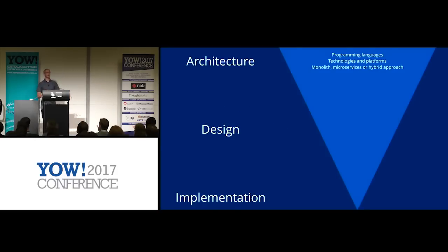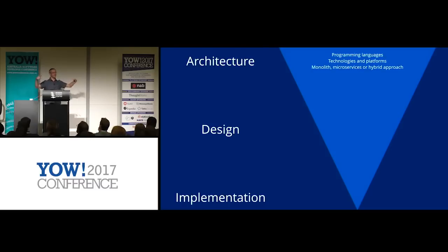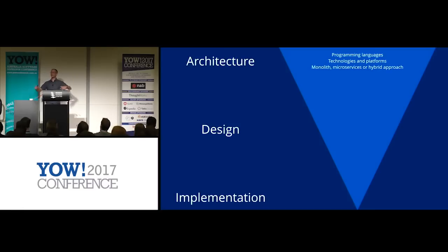Things like your choice of programming language — that's significant, that's hard to change later. You can't take a .NET app and refactor it to be Java. If you want to make the choice of programming language less significant, maybe you break your architecture up into a set of microservices and use a different language for every microservice. The choice of doing that is another significant decision. If you want to use a ports and adapters style architecture or Uncle Bob Martin's Clean Architecture as a way to isolate your business code from your technology choices, that structure is again another significant choice.